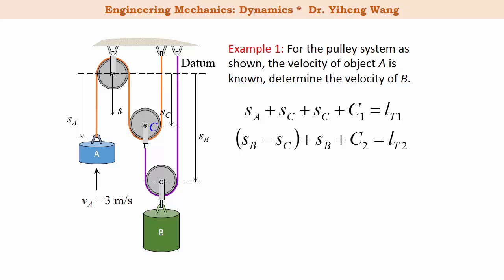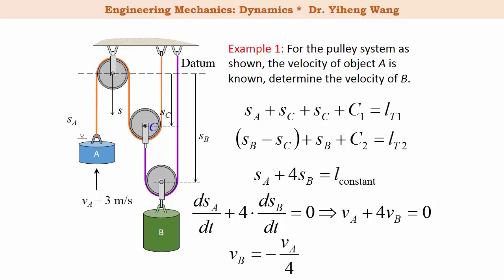And now we can combine these two equations by canceling out the middleman SC, and get SA plus 4SB equals to a total constant length. And now step five, we differentiate this equation, and then we get VA plus 4VB equals to zero, so VB equals to negative VA divided by four, and that is 0.75 meter per second, pointing downwards.